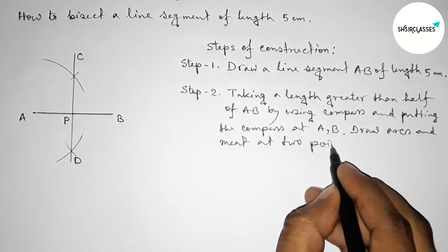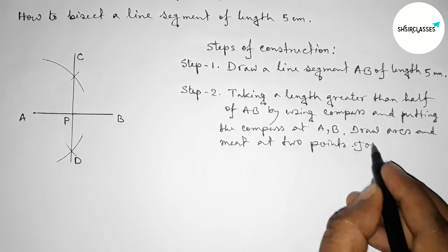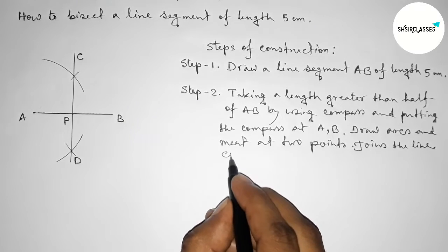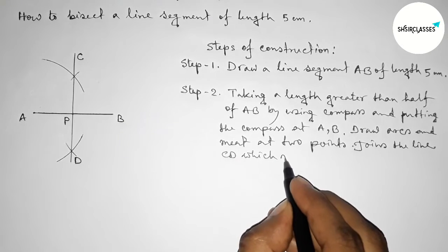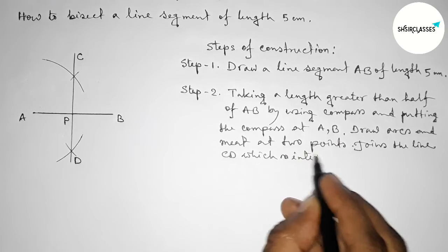Putting the compass on the point A and B and draw arcs which meet at two points. Now join the line CD which bisects the line AB at the point P.